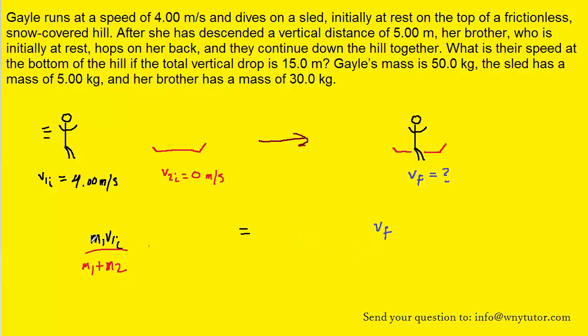We can fill in the known values for the mass of Gale, the initial speed of Gale, and the mass of the sled. When we simplify that on our calculator, we get approximately 3.64 meters per second. So that will be the final speed of Gale and the sled after she jumps on it.